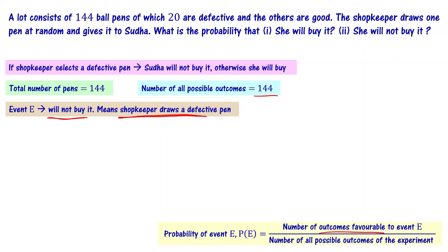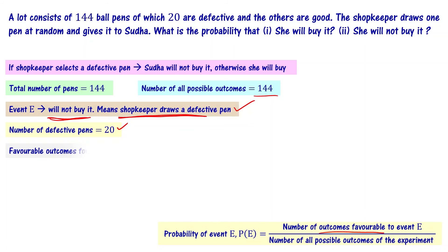The event is the shopkeeper drawing a defective pen. How many defective pens are there? There are 20 defective pens. If one of those 20 defective pens is drawn, she is not going to buy it. The number of favorable outcomes for this particular event is 20.